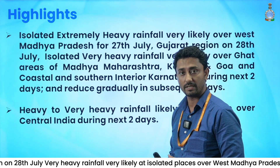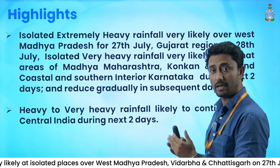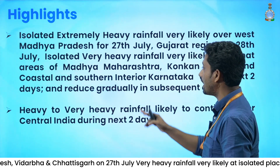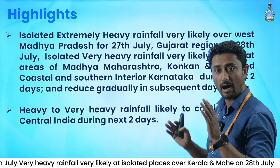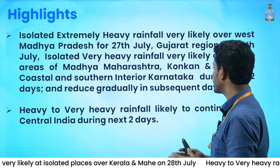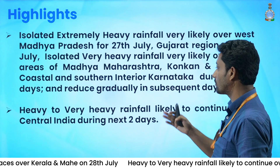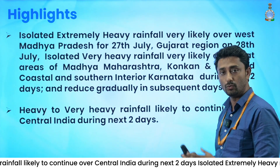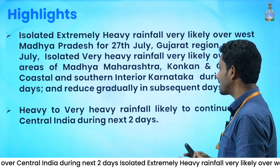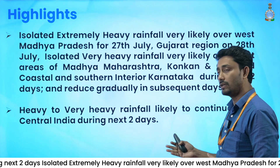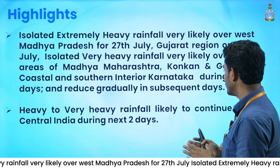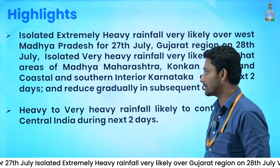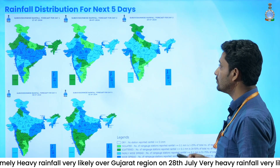If we talk about today's highlights, we are expecting isolated extremely heavy rainfall over West Madhya Pradesh. We are also expecting extremely heavy rainfall over isolated places in the Gujarat region for tomorrow. Apart from that, isolated very heavy rainfall is very likely over the Ghat areas of Madhya Maharashtra, Konkan, coastal Karnataka, and southern interior Karnataka during the next two days. Heavy to very heavy rainfall is also likely to continue over the central part of India during the next two days.